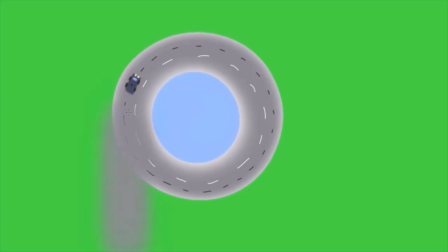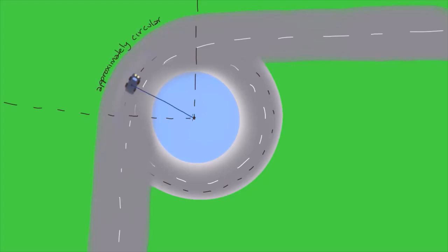But it turns out a section of the turn is approximately circular. So, if the car is going at a constant speed, then we can analyze this part of the turn.